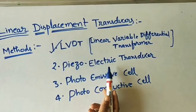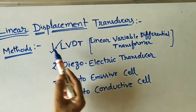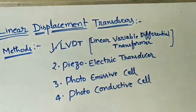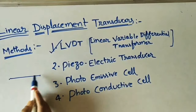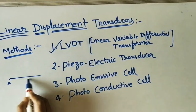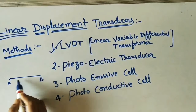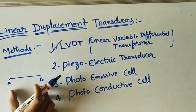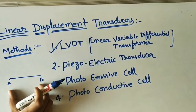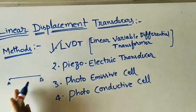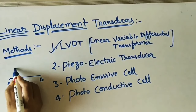Before that, let me explain what displacement means. Displacement means if we take any vehicle or object moving from one point to another point — initially it is at point A and then it goes to position B — that is called displacement. By using these transducers we can measure how much length a given object or vehicle moves from one point to another point.